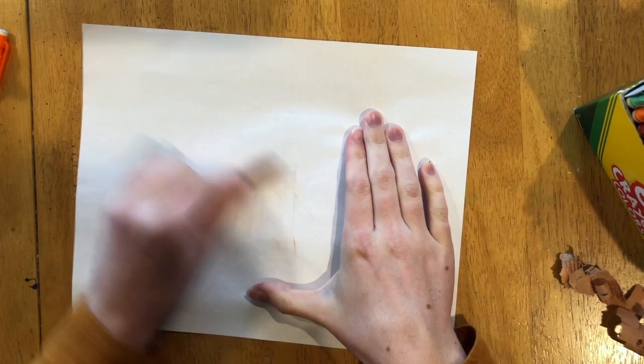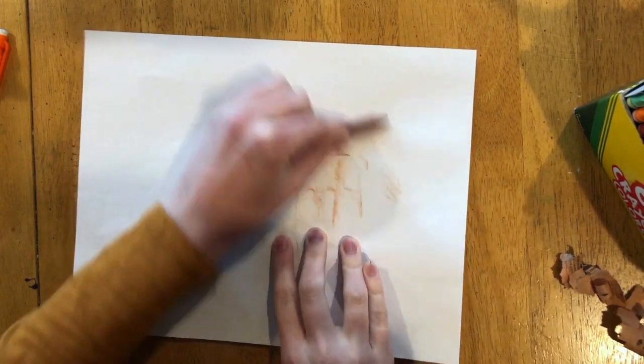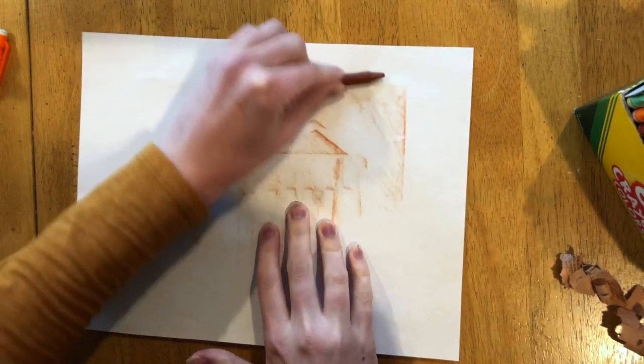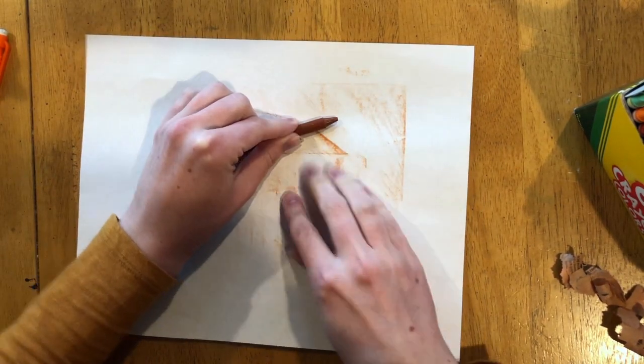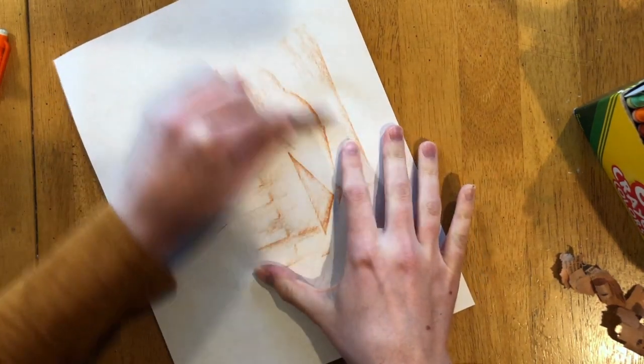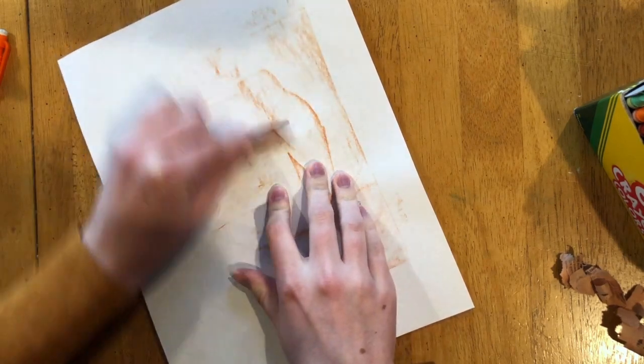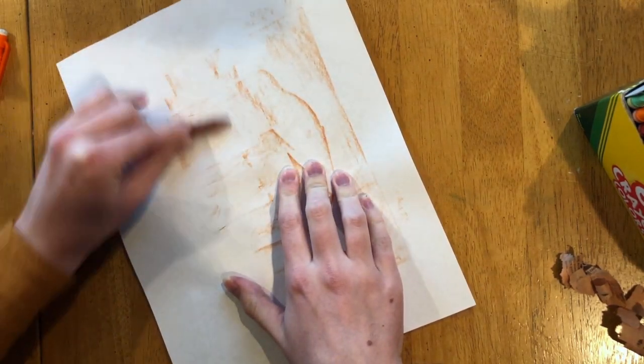Now that the glue has dried, I'm going to take my white paper and put it on top of my cardboard creation. And then I took the wrapper off of this crayon and I'm just rubbing the side of the crayon all over the paper, making sure to get all the edges and all of the lines so that I can transfer my collagraph to my paper.